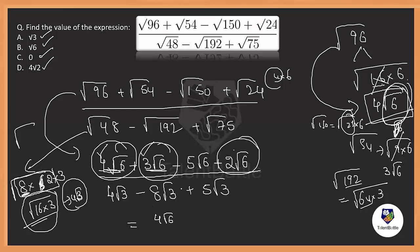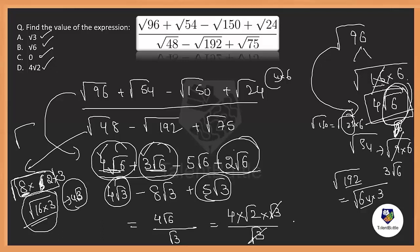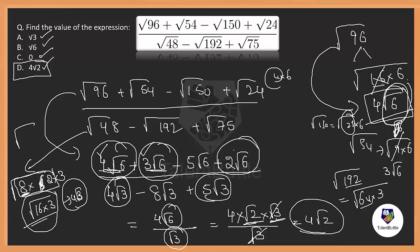The denominator: 4√3 − 8√3 + 5√3 = 4+5 = 9, 9−8 = 1, giving 1√3. So the expression becomes 4√6 divided by √3. Writing √6 as √2 × √3: we get 4√2 × √3 divided by √3, and the √3 cancels. So the answer is 4√2, which is option D. This question is from the concept of simplifications.